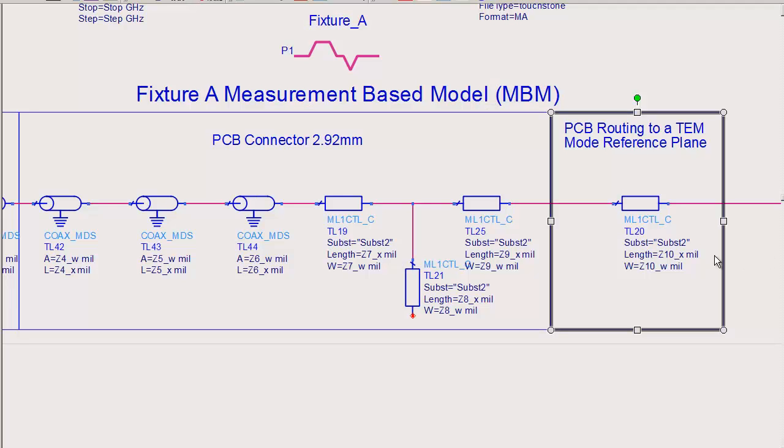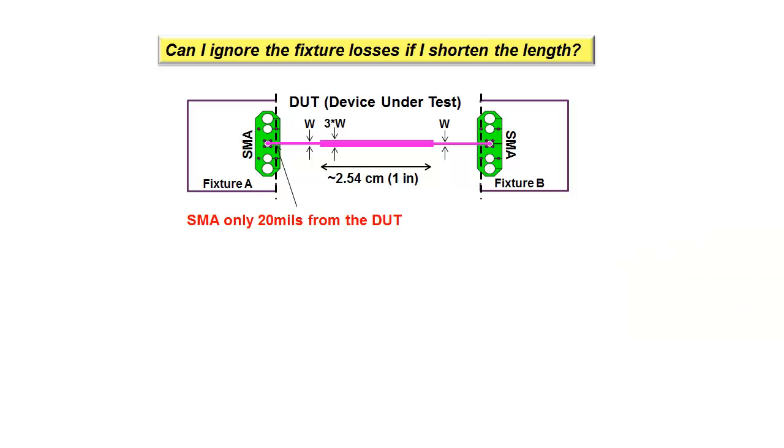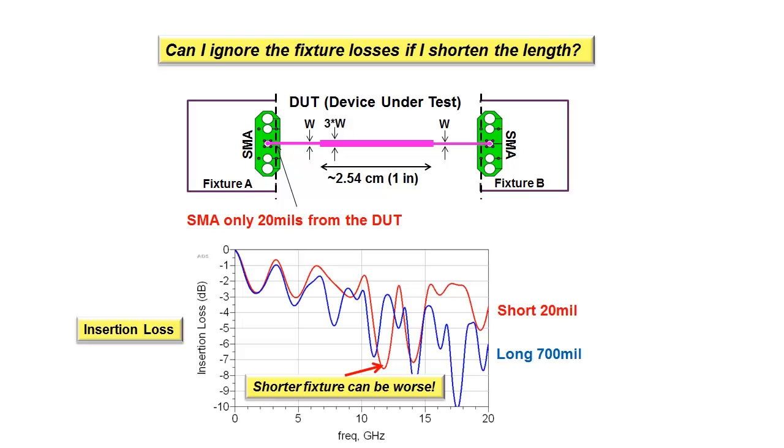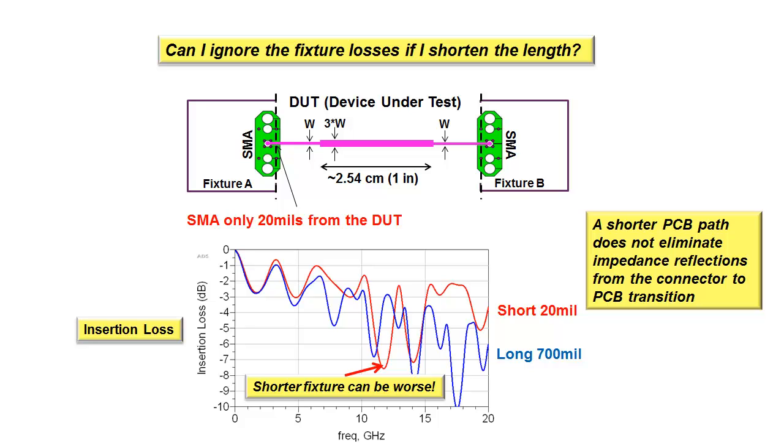In simulation, it is easy to answer this question by adjusting the length of the PCB routing that is included in the fixture. This top picture shows how fixture A on the left of the DUT and fixture B on the right of the DUT have been shortened by 680 mils and the connectors are now located only 20 mils from the DUT structure. The simulation easily shows that at low frequency there is the expected lower loss and the shorter fixture helps, but at the higher frequencies needed for 32 gigabit per second Serides channels, the shorter fixture does not improve the loss and can actually make it worse. At the higher frequencies where the fixture is a significant portion of the wavelength for a given frequency, then the losses due to the interaction of multiple reflections can become significant. This clearly demonstrates the need to either remove the fixture from the measurement or to include it in the simulation.